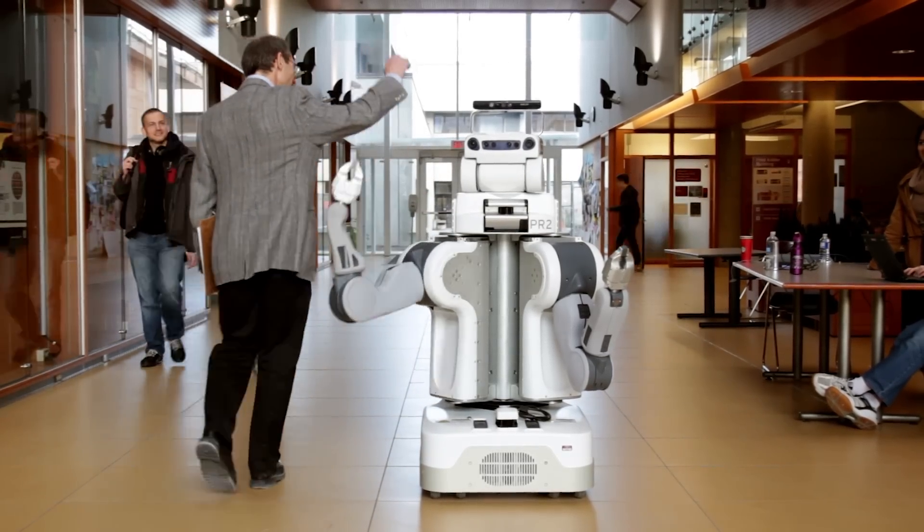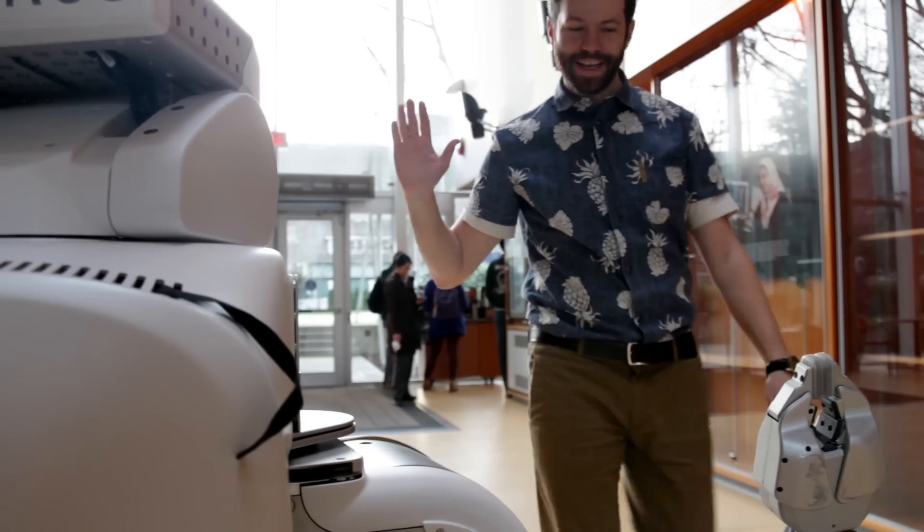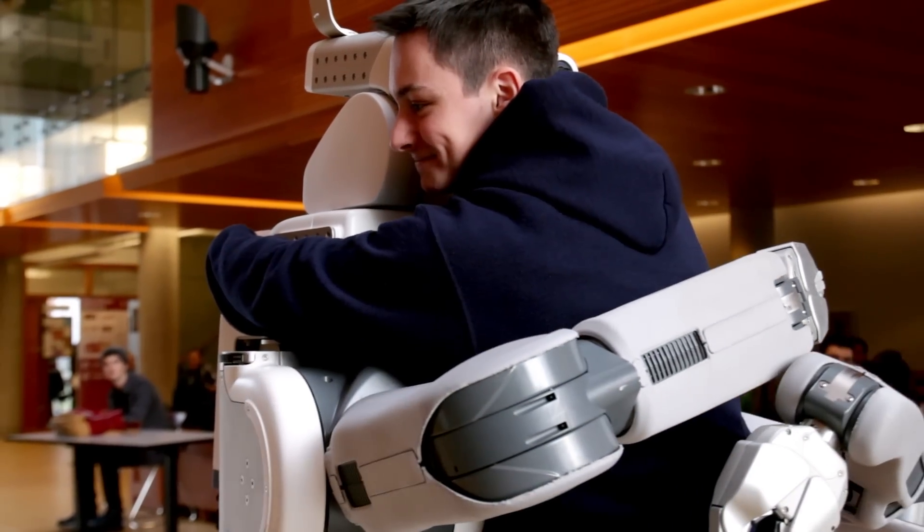The robot should know what it's supposed to do, and it should know that by observing you, by knowing what you want to achieve. It should be able to understand that and respond appropriately.